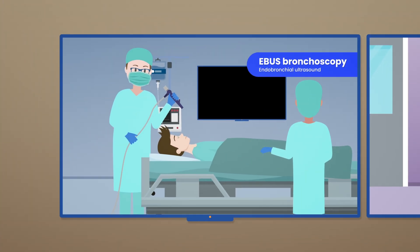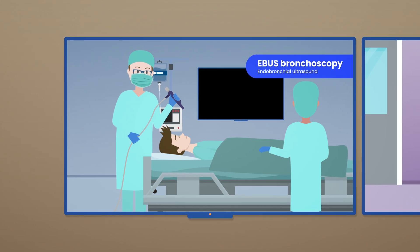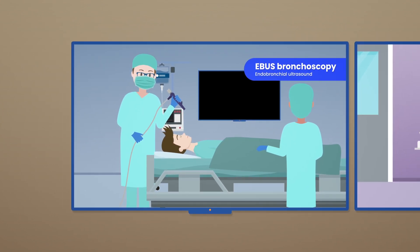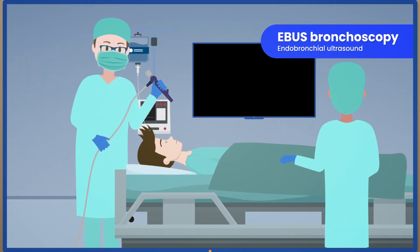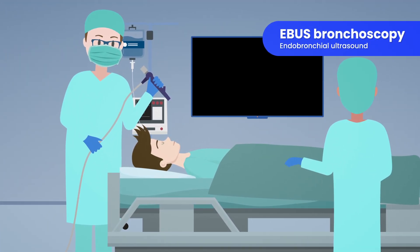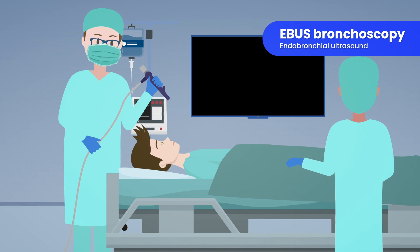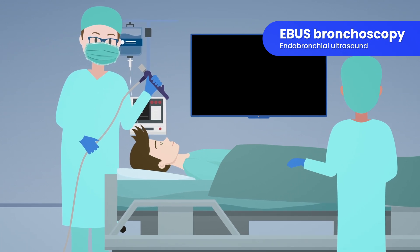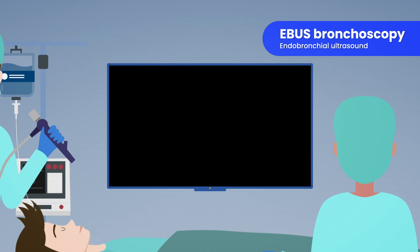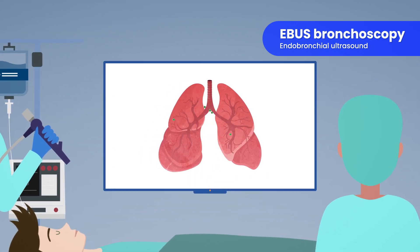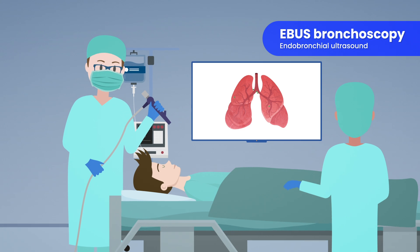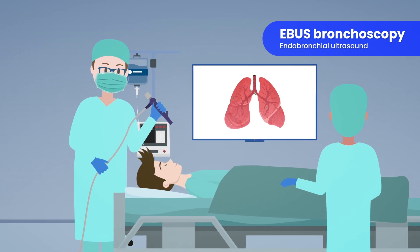Your doctors may want to biopsy the lymph nodes inside your lungs using endobronchial ultrasound, also called EBUS bronchoscopy. This is a special type of bronchoscopy procedure where the flexible tube is inserted in your mouth and down your airways, and will also have an ultrasound probe on the end. The ultrasound probe is able to take closer pictures of the lung tumor and lymph nodes, and the doctor can then take a biopsy of any concerning tissue from inside the airways.